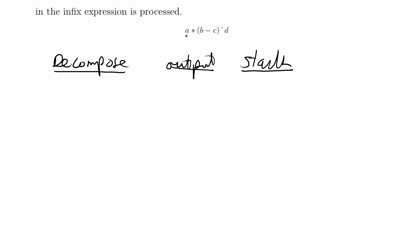In the decompose column I'm just going to write out every operand and operation that we're given. We have a, star, open parentheses, b, minus, c, close parentheses, caret, and d.